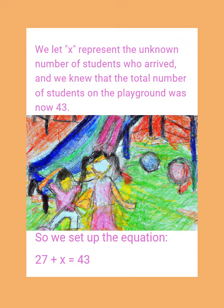We let X represent the unknown number of students who arrived, and we knew that the total number of students on the playground was now 43. So we set up the equation: 27 plus X equals 43.